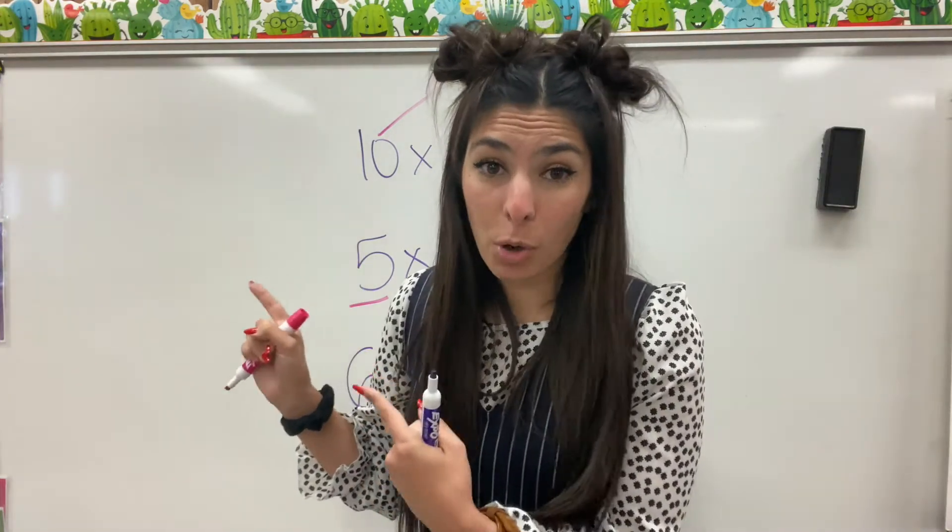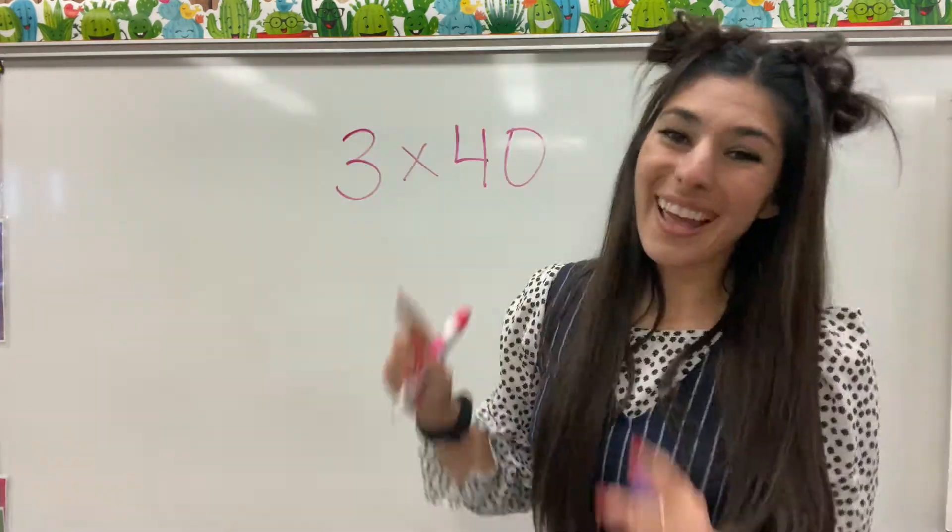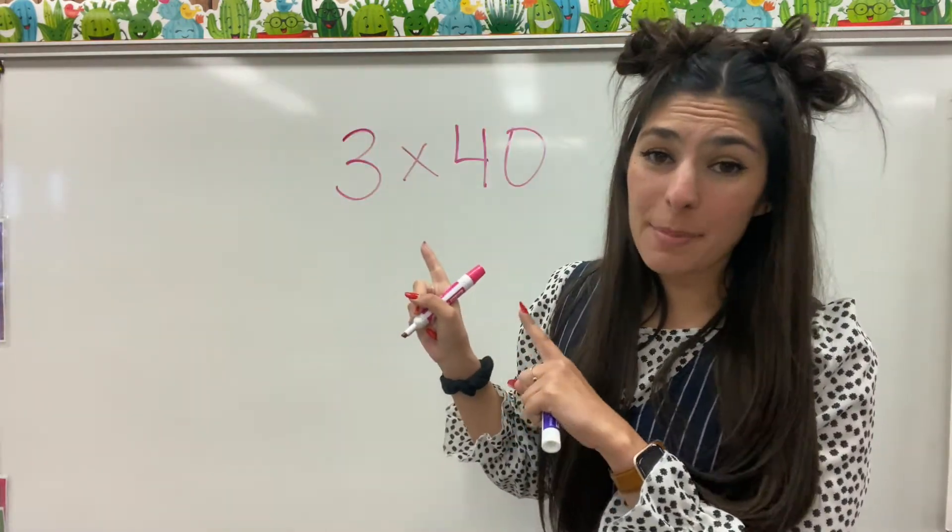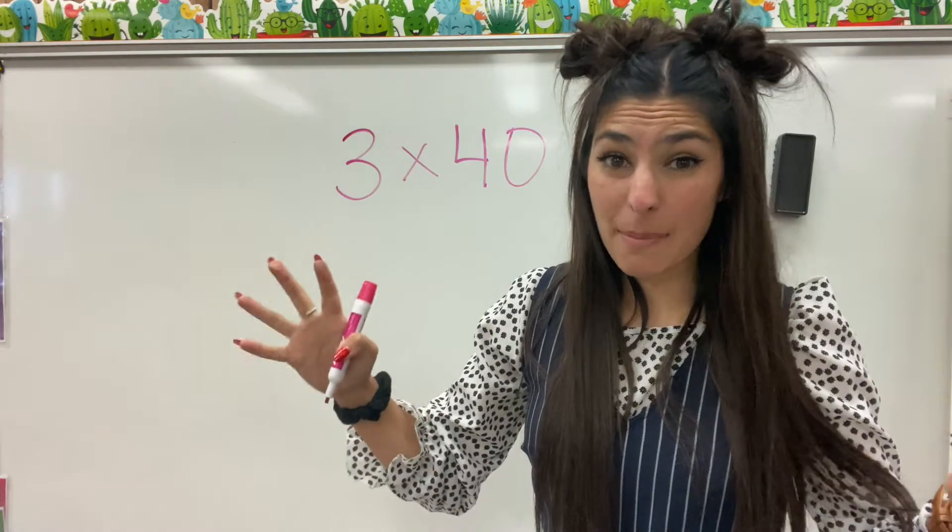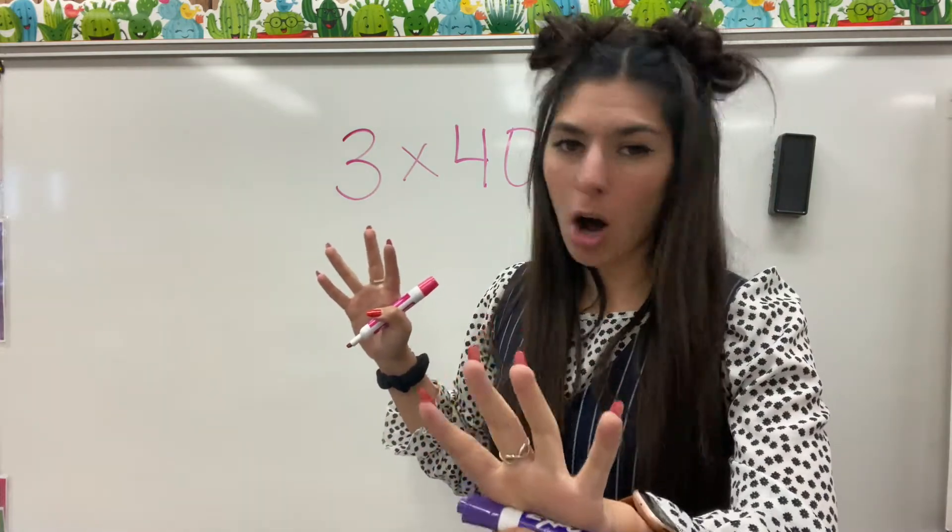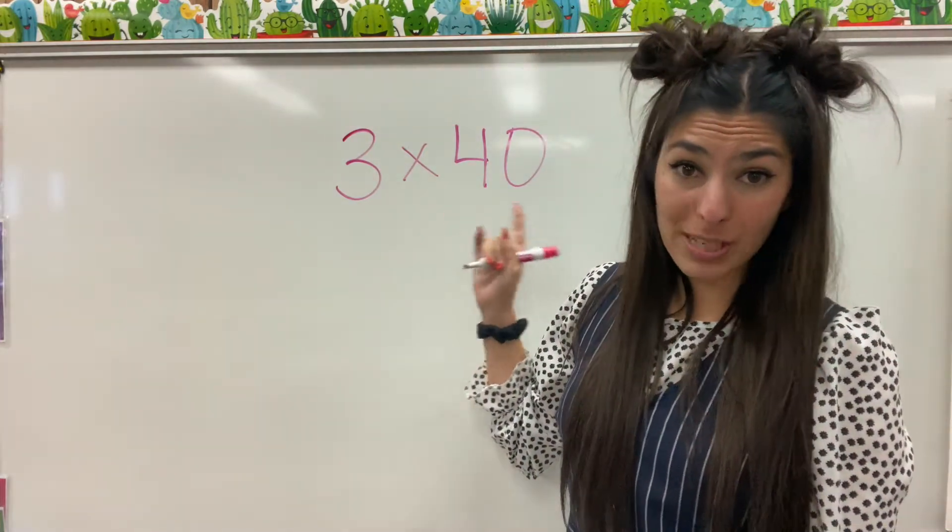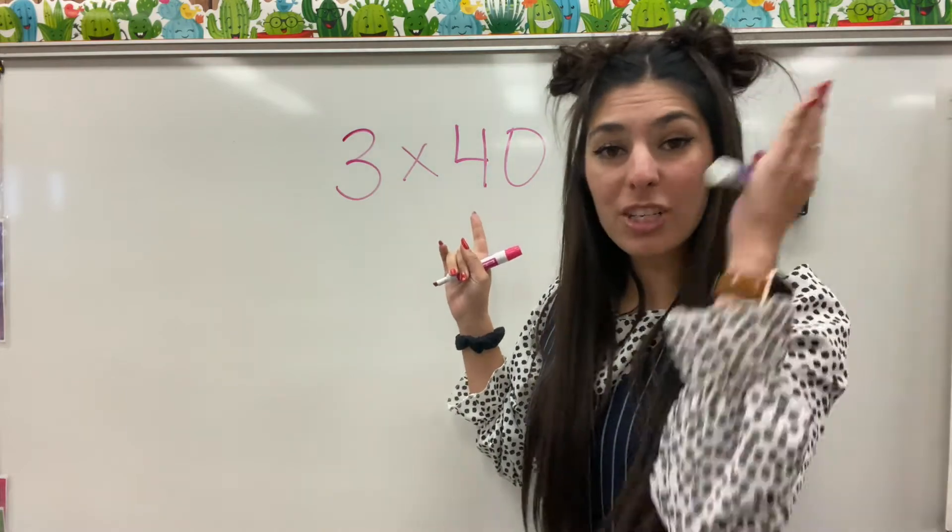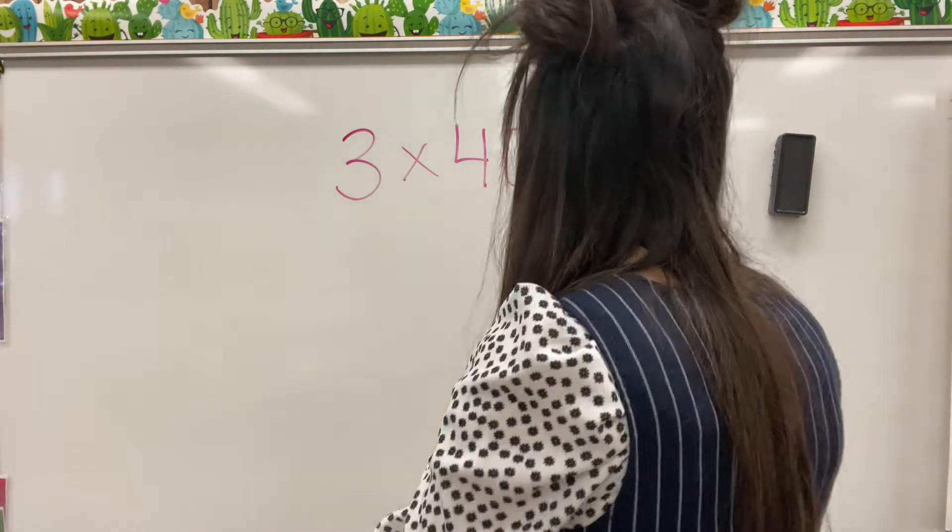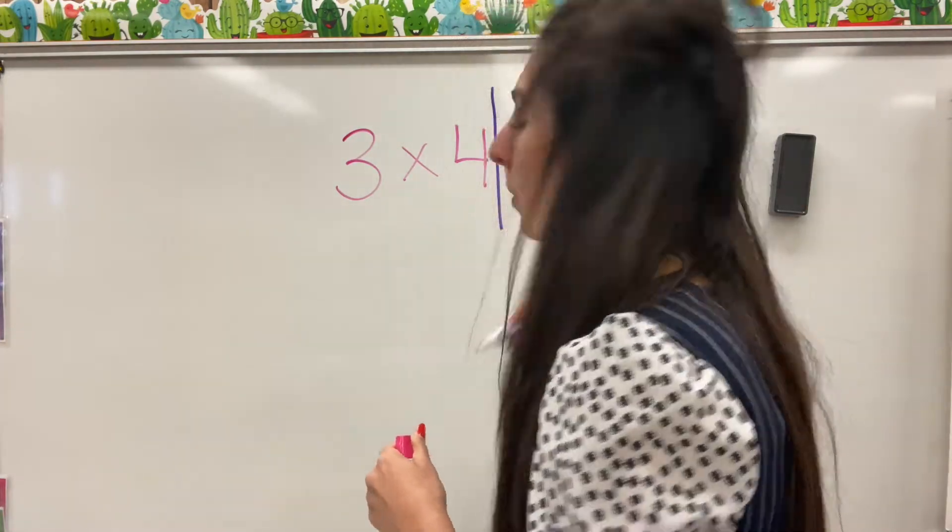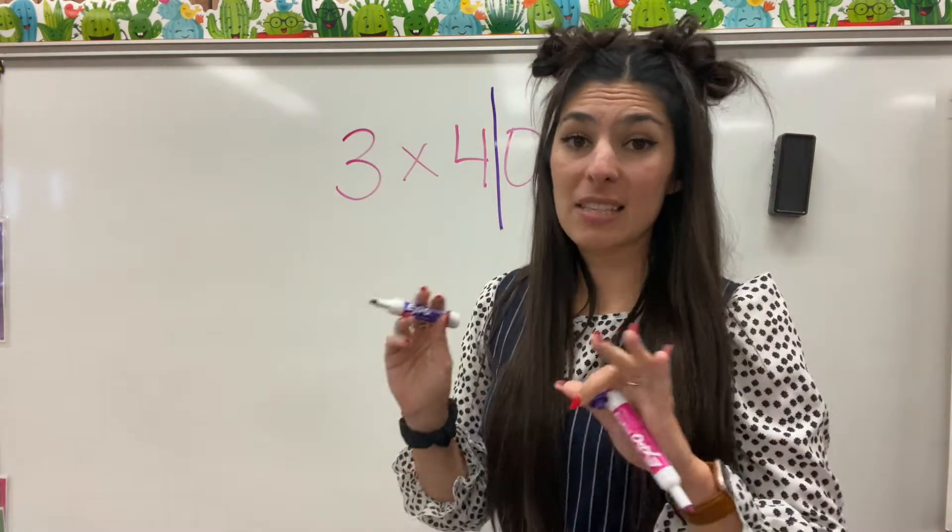This is pretty much the same thing we're going to be doing but with one extra step. Okay, so let's start off with 3 times 40. Now this sounds like a really big number but really it's quite simple. All we're going to do is with this two-digit number, 40, we're going to chop it in half. So go ahead and chop it like we normally would when we're looking for our 10s and 1s.